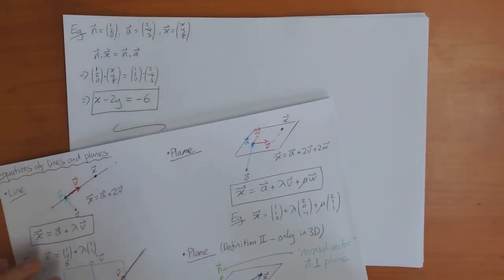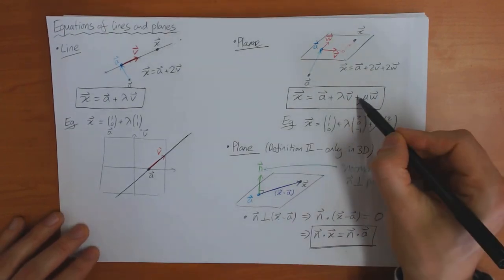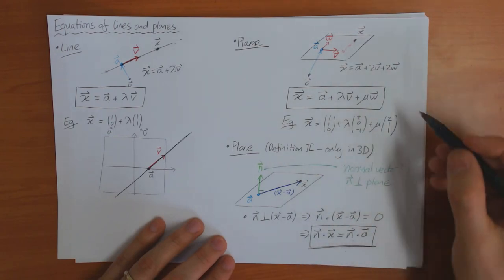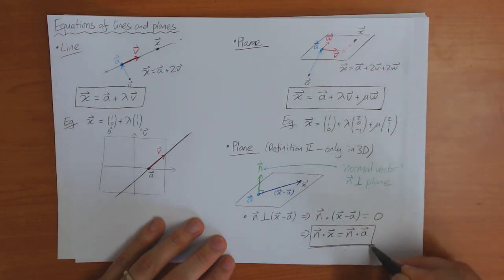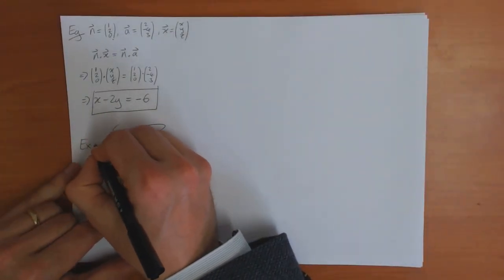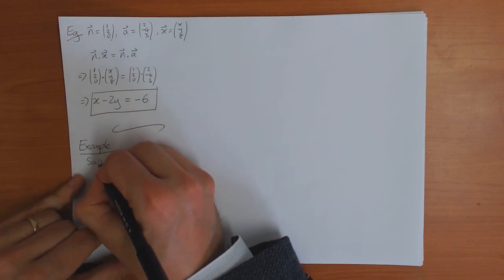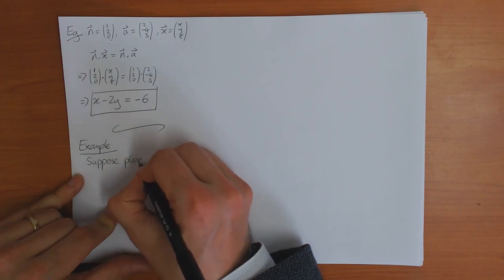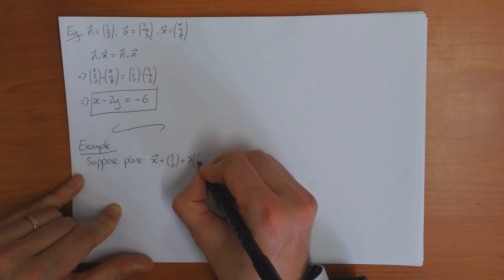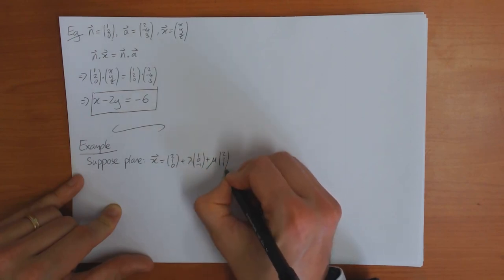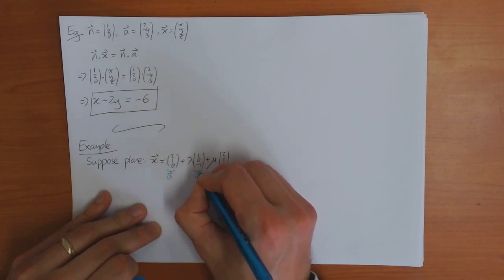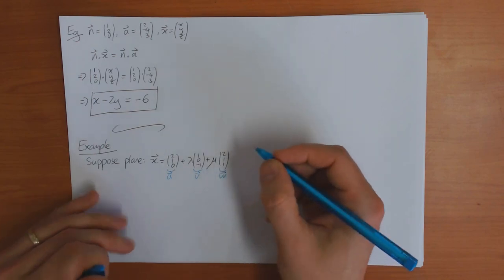One thing you can do in three dimensions is convert between the two definitions of a plane. To finish this video I'll do an example of that — starting with the parametric definition and converting it to the normal form. So suppose we have a plane given by x equals (2, 1, 0) plus lambda times (1, 0, -1) plus mu times (2, 1, 1). Here a is (2, 1, 0), v is (1, 0, -1), and w is (2, 1, 1).